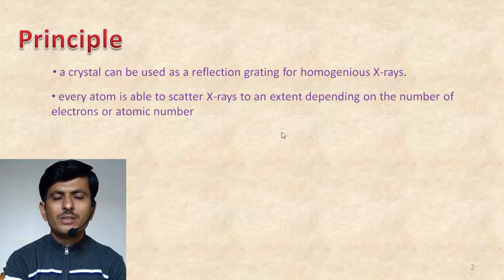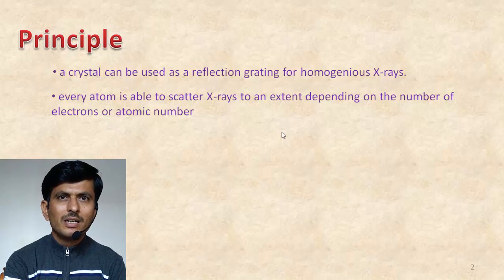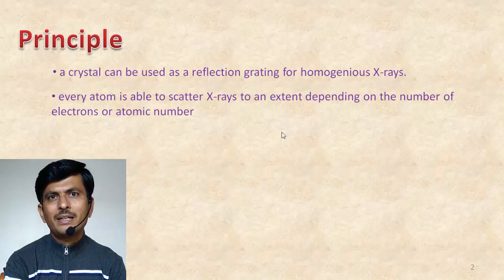Each atom of the crystal is able to scatter the X-rays to some extent, and this depends on the number of electrons or atomic number of the atoms present in that crystal.